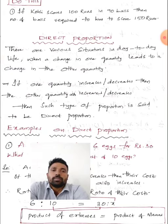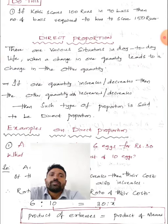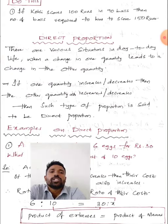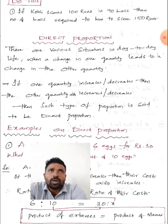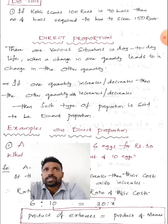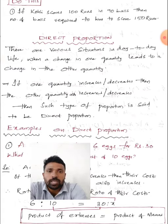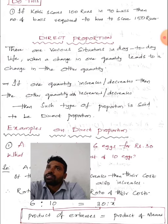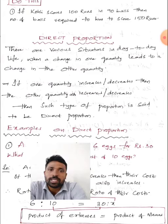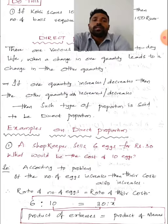Now the most important topic: direct proportion. There are various situations in day-to-day life when a change in one quantity leads to a change in the other quantity. If one quantity increases or decreases, then automatically the other quantity also increases or decreases — such type of proportion is said to be direct proportion.